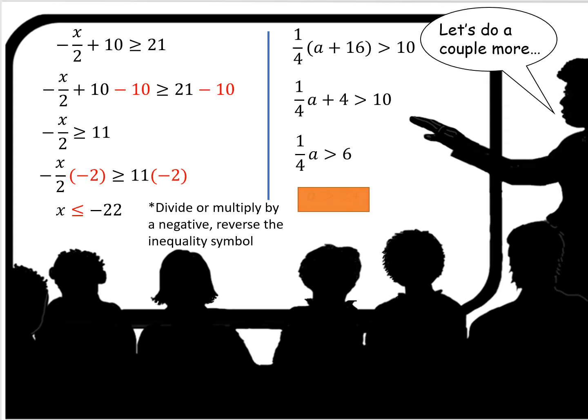So the greater than or equal to becomes less than or equal to. Why? Because we multiplied both sides by a negative, negative 2.